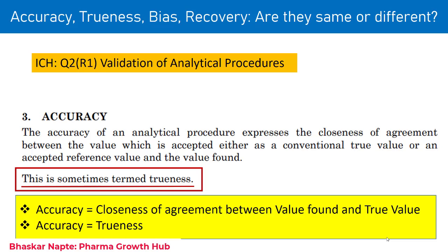For example, you have spiked 10 microgram per ml of the reference standard and you found at the end of analysis 9.8 microgram per ml — that becomes your value found, and that measures the closeness of agreement. How closely your results align with the true value is called accuracy. According to ICH, accuracy is also sometimes termed as trueness, though ICH has not further explained any details about trueness.